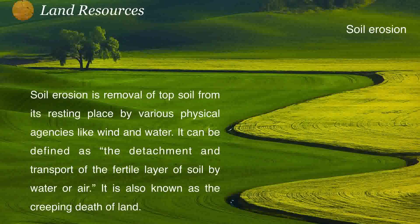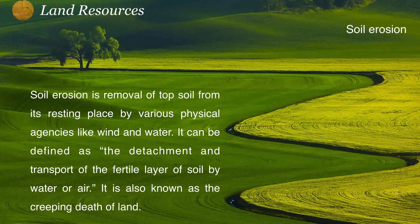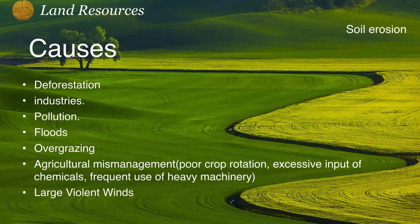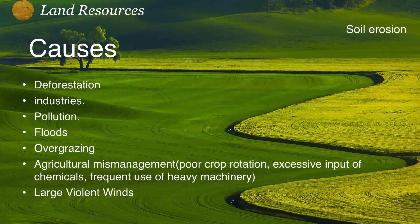Now let's look at the causes of soil erosion. Soil erosion is the removal of topsoil by high-speed wind or water. The main causes include deforestation, industrialization, pollution, floods, and overgrazing — which means cattle eating too much grass, which is harmful to the soil. Other causes include agricultural mismanagement such as poor crop rotation, excessive use of chemicals, use of heavy machinery, and large violent winds.